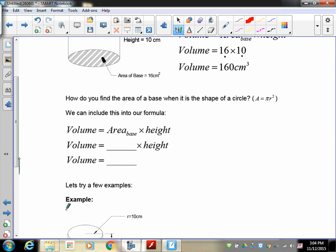So how do you find the area of the base when it's a shape of a circle? Well, we have to find the area of the base itself. So how do we find that? Well, area is equal to pi r squared, so all we need to do is to put that in here.